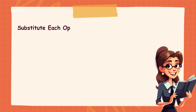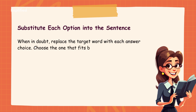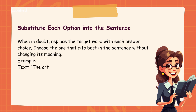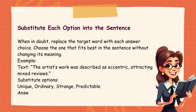Tip 4: Substitute each option into the sentence. When in doubt, replace the target word with each answer choice and choose the one that fits best without changing the sentence's meaning. Example — text: 'The artist's work was described as eccentric, attracting mixed reviews.' Substitute options: unique, ordinary, strange, predictable. Answer: strange, as it fits the context of mixed reviews.